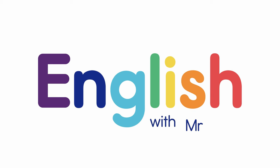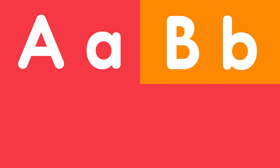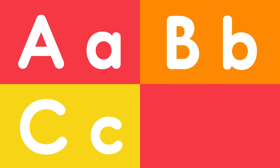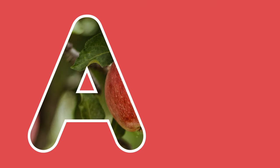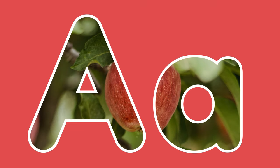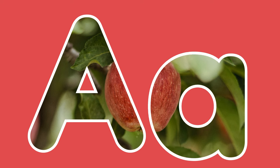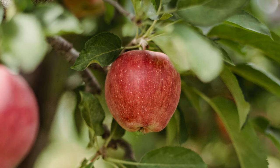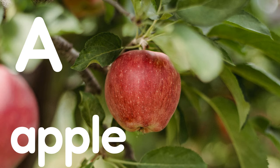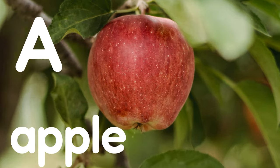English with Mr. Sean. This is A. A says A. What do you see? Starting with A. A, A, A, Apple. A is for Apple. A, A, Apple.